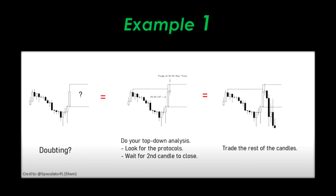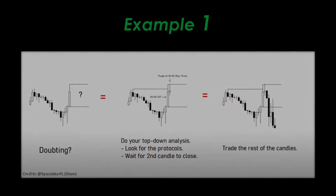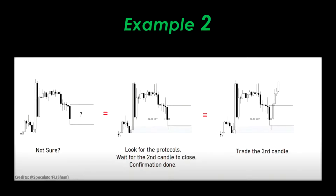It really is as simple as that. Look for the protocols, wait for the second candle to close, and only then trade the CRT. Here's another example — you don't know if this candle is a correct CRT. Following the same steps, look for the protocols, confirm at least two or three, then wait for one side of the CRT to be purged and the candle to close inside the CRT. Once it closes inside and follows all protocols, it confirms your CRT. It becomes a valid Confirmational CRT and you can trade the third candle, targeting the opposing end of the range.